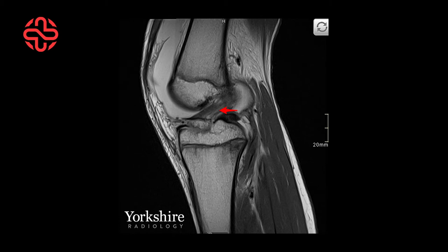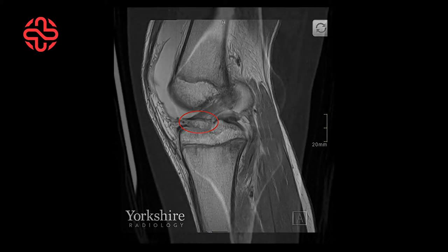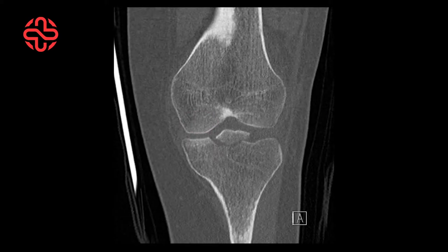The bony attachment to the tibia is displaced, with the anterior portion elevated, lifting up like a trapdoor. On a coronal CT, the bony fragments are easily visualised.